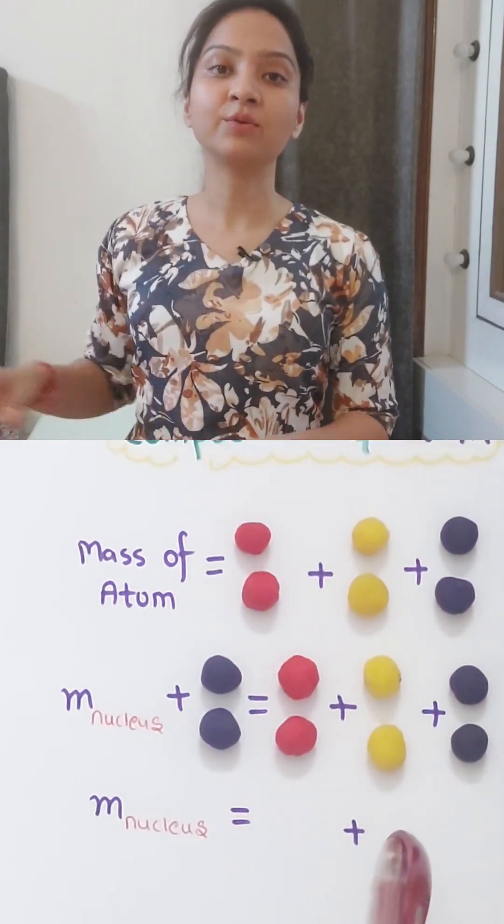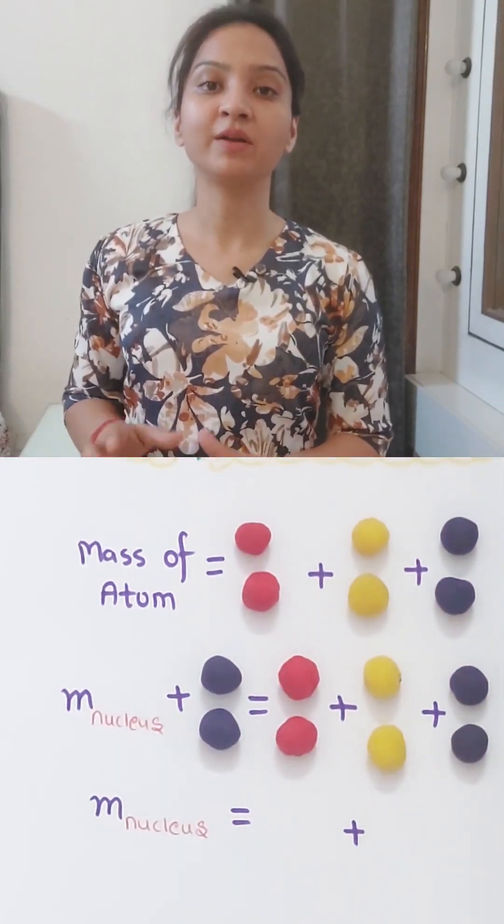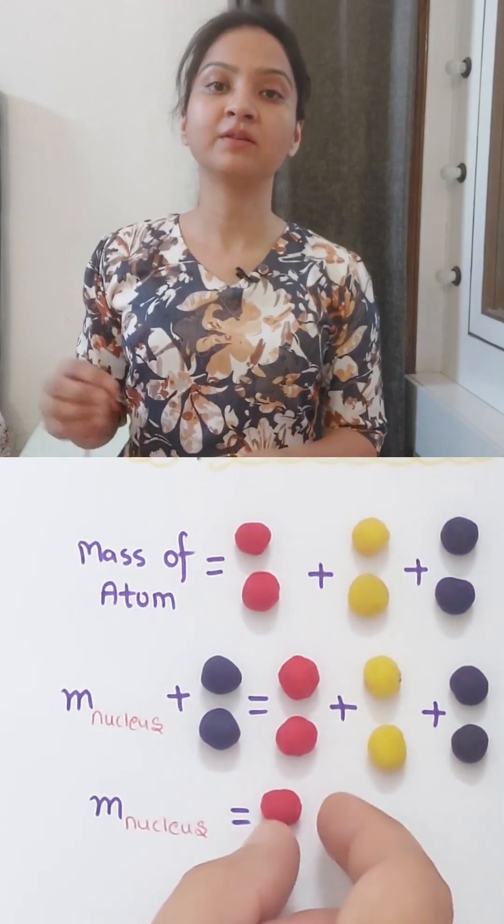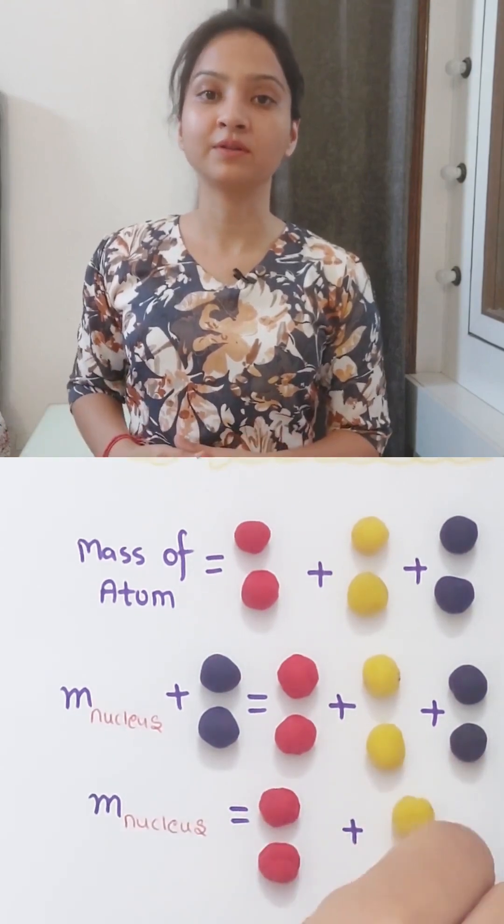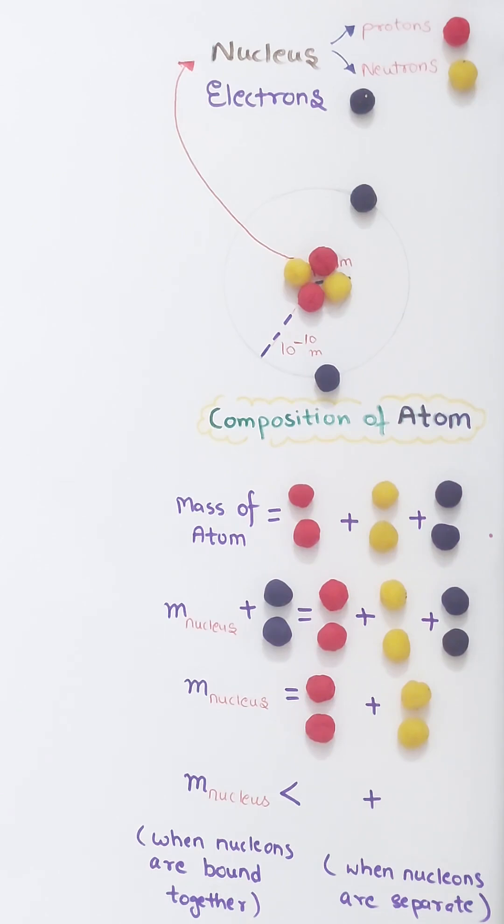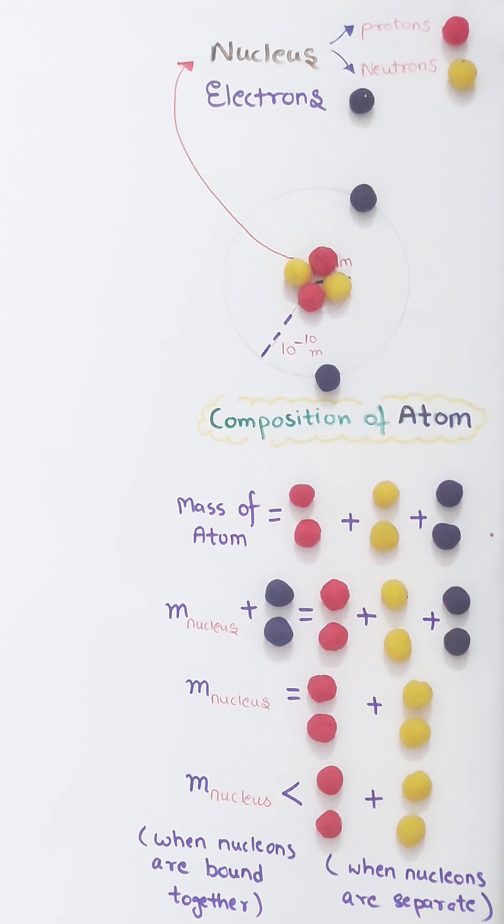Electron masses cancel out on both sides, so we are left with mass of nucleus should be equal to the masses of number of neutrons and protons. But that's not the case. Mass of the nucleus is slightly less than the masses of individual protons and neutrons when they are separate.